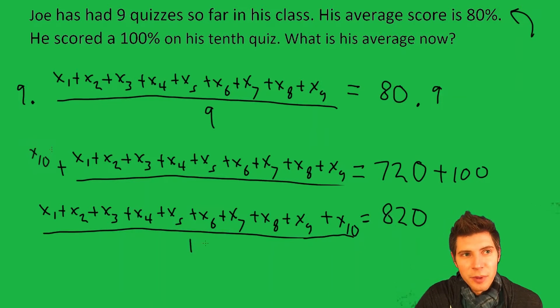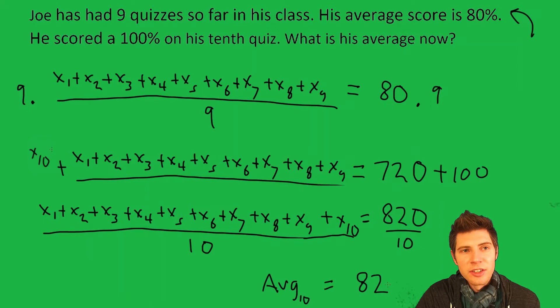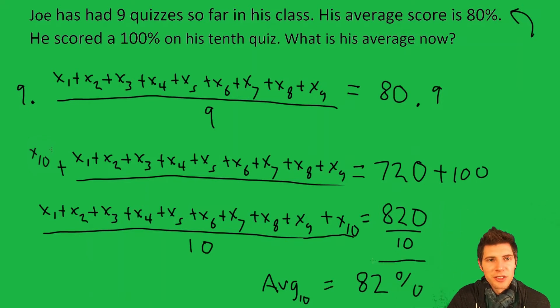Now the sum of the first 10 is 820. Now if we divide both sides by 10, now that's going to be the average. So 820 divided by 10 is 82. So the average of the first 10 is equal to 82. So 82% is the answer to the question.